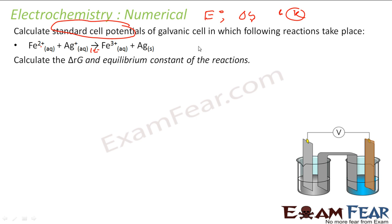First let's write the cell representation. Fe²⁺ is oxidized to Fe³⁺, and then Ag⁺ is reduced to Ag. So E° cell is E right minus E left, which is E of Ag⁺ to Ag minus E reduction of left, that is Fe³⁺ to Fe²⁺. Please note it is Fe³⁺ to Fe²⁺, I'm talking about reduction of this. You can check the value in the chart: this becomes 0.8 minus 0.77, that is 0.03 volt. First part is done.